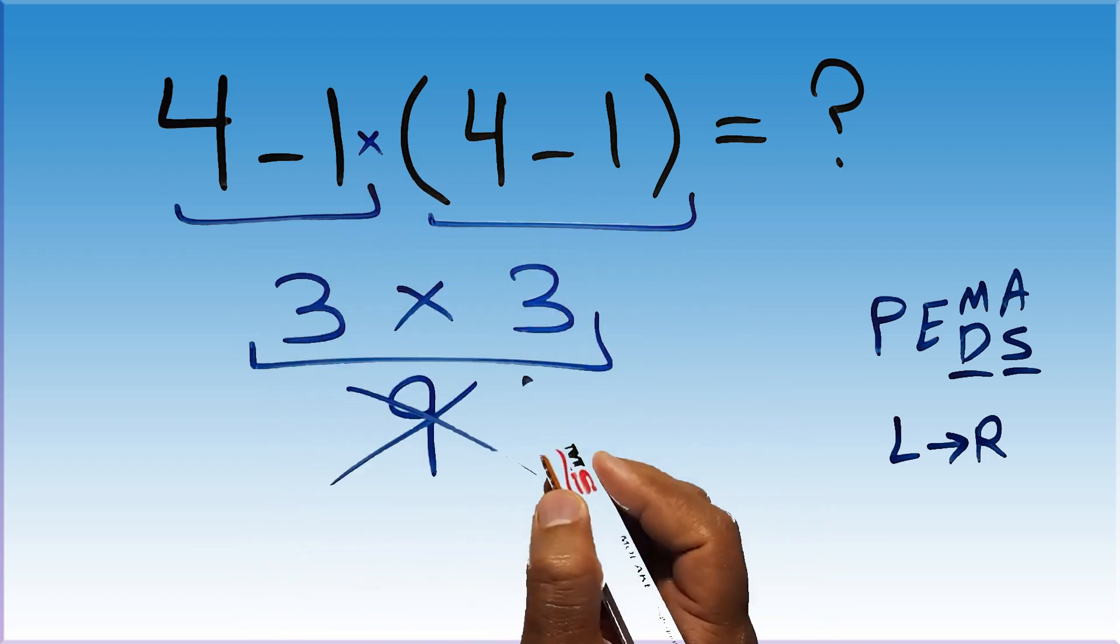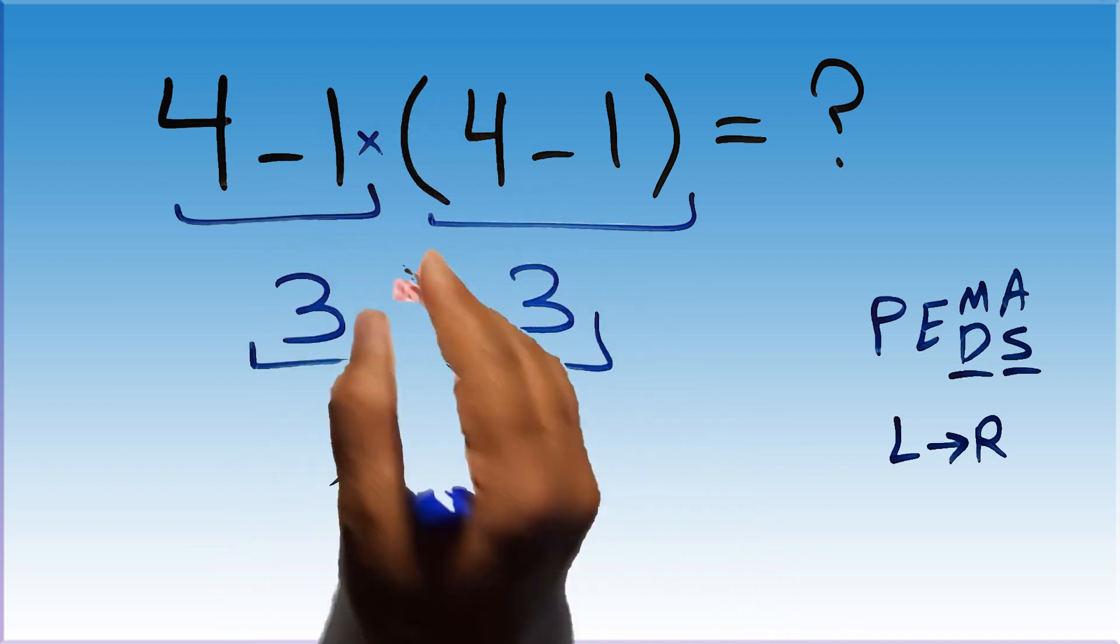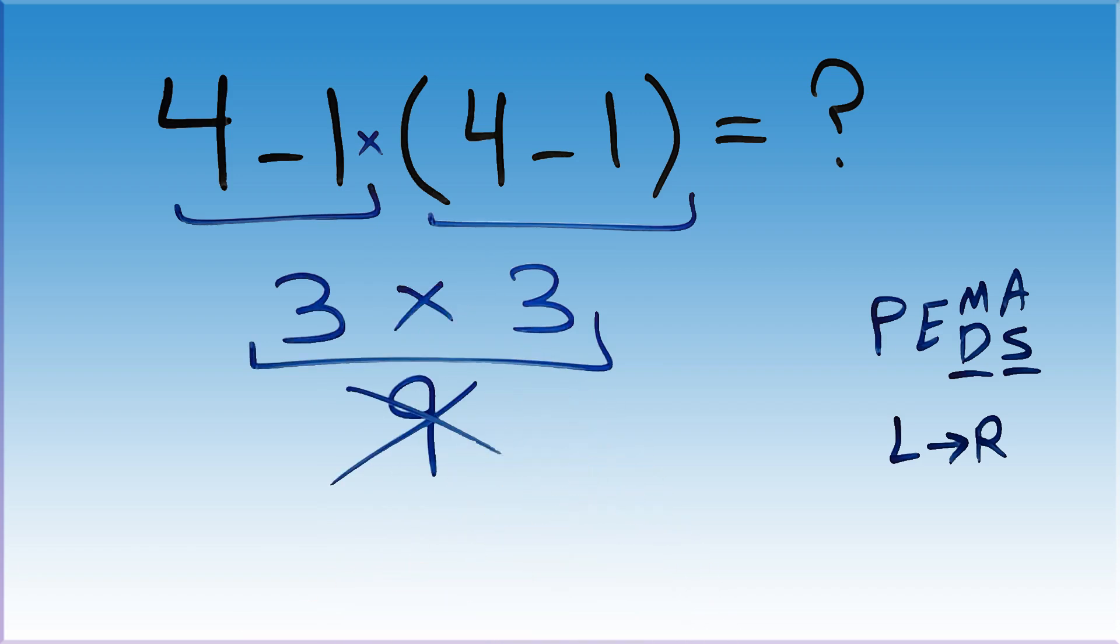Here we have a multiplication, because in mathematics, when a number is placed next to parentheses, it means multiplication, and we usually don't write the multiplication sign for brevity.